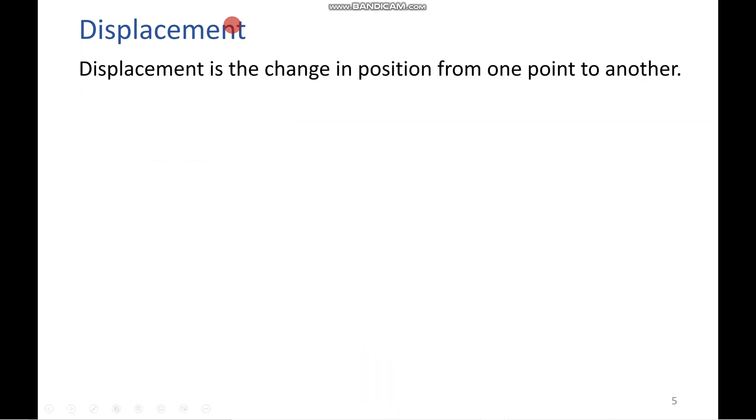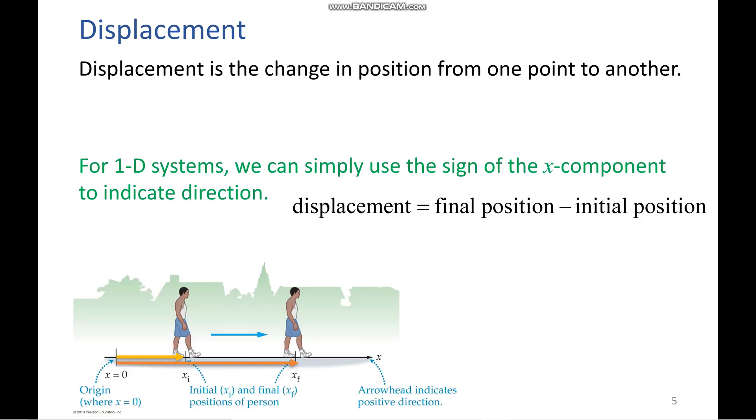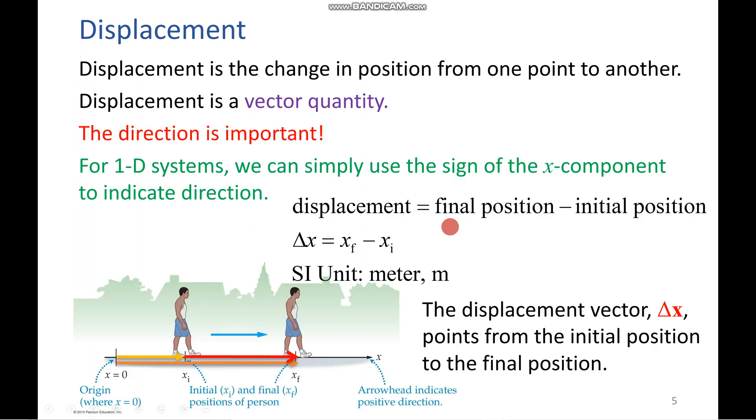So now let's look at displacement. Displacement contrary to distance is a vector quantity. This means we take into account direction, which you will use your chosen axis components to label as positive or negative. Mathematically, displacement is simply your initial position subtracted from your final. And this resultant vector is defined as delta x.